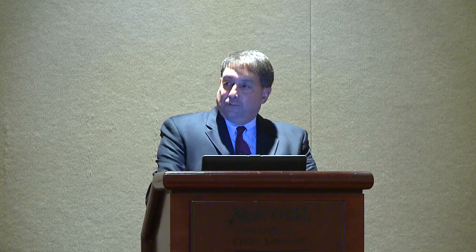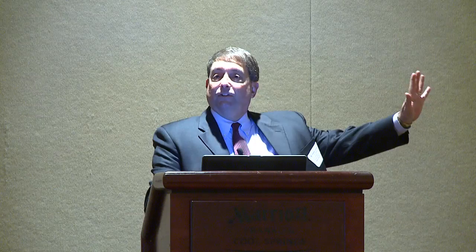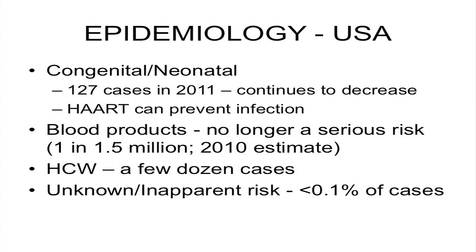Other cases include hemophiliacs, people getting transfusions, and a very small number where a risk factor has not been identified. But when those cases are studied closely, risk factors are found — people don't always tell you the truth. Pretty much everybody they've looked at closely enough has one of these risk factors. Congenital/neonatal infections are now very low — 127 cases in 2011 and continuing to decrease. Highly active antiretroviral therapy has prevented infections in the neonate when the mother is identified soon enough.